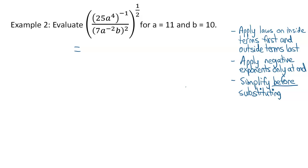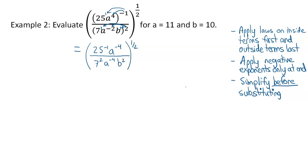Applying the inside first — I'm applying this negative one to the two terms in the brackets. So I get 25 to the power of negative one and a to the power of negative four in the numerator. In the denominator, there's an exponent of one on both the seven and the b, so I get seven to the power of one times two (giving seven squared), a to the power of two times negative two (giving negative four), and b to the power of one times two (giving b squared). All of that is to the power of a half. That was the power of a power rule. Now applying the quotient rule: a to the negative four minus negative four gives a to the power of zero, which equals one — that's the quotient rule in disguise.